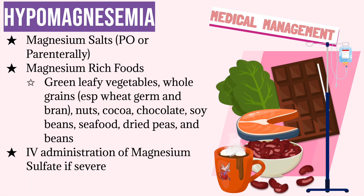To medically correct hypomagnesemia, the patient may be given magnesium salts either orally or parenterally. Magnesium-rich foods may also be encouraged, such as green leafy vegetables, whole grains, nuts, cocoa, chocolate, soybeans, seafood, dried peas, and beans. If your patient has a severe magnesium deficit, magnesium sulfate may be prescribed intravenously.